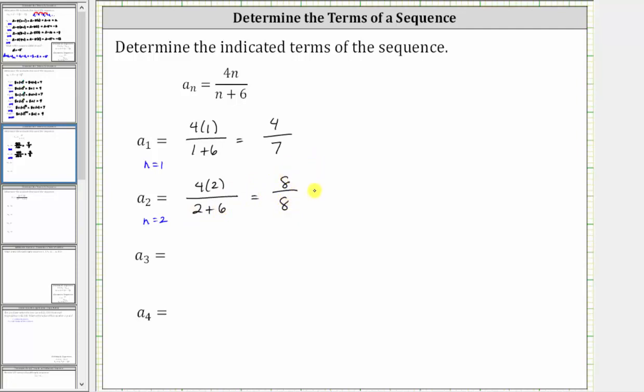8/8, or 8 divided by 8, equals 1. So a_2 = 1.